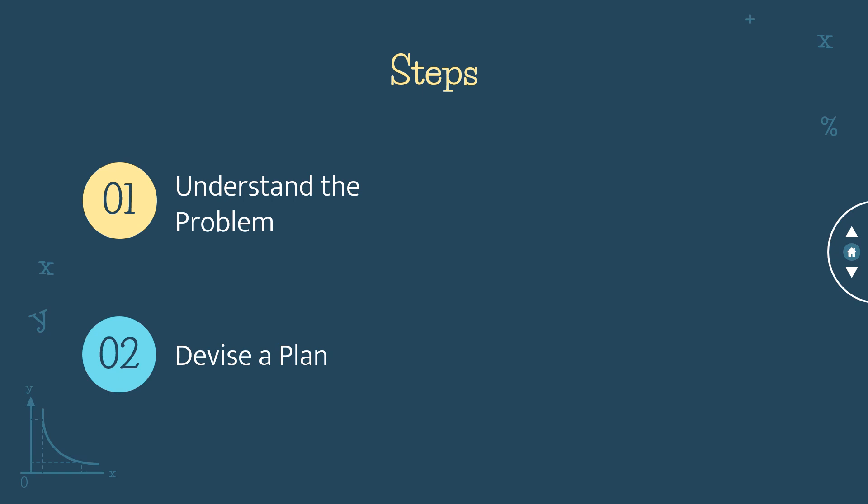The third step is to carry out the plan. Use the method that you picked to solve the problem. Keep in mind three things: number one, work carefully; number two, keep an accurate and neat record of all your attempts; and number three, realize that some of your initial plans will not work, and you may have to devise another plan or modify the existing plan.